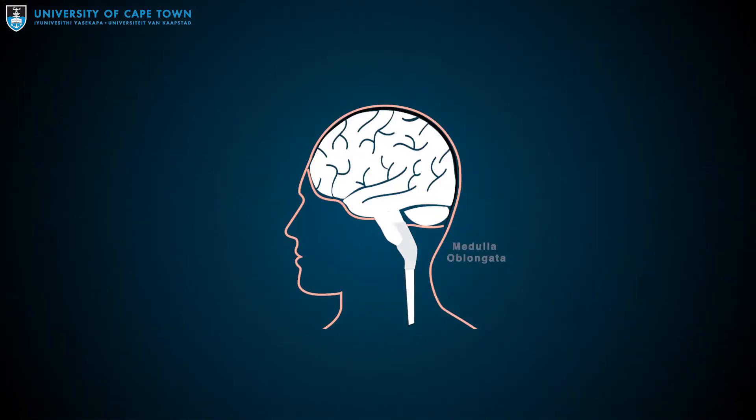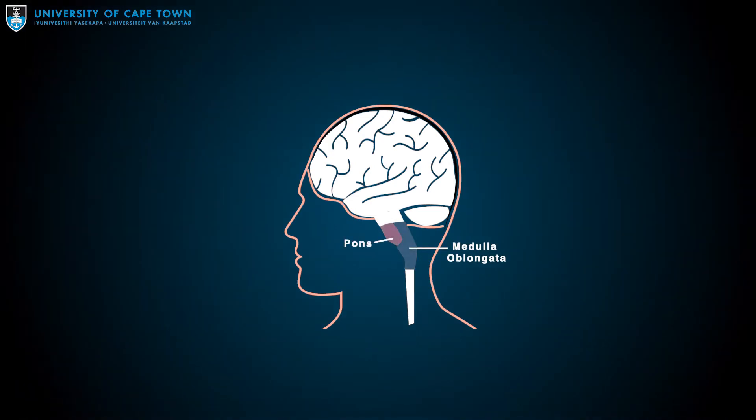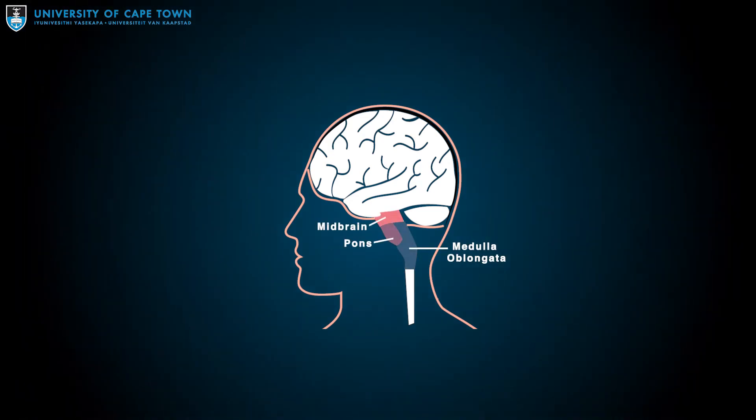If there is no evidence of responsiveness, one moves on to brainstem testing. The brainstem is the most essential part of our brain to living. It comprises the medulla oblongata, the pons, and the midbrain. The nerve connections of the motor and sensory systems pass through the brainstem to the rest of the body, and it houses the respiratory center and the cranial nerves numbers 3 to 12.